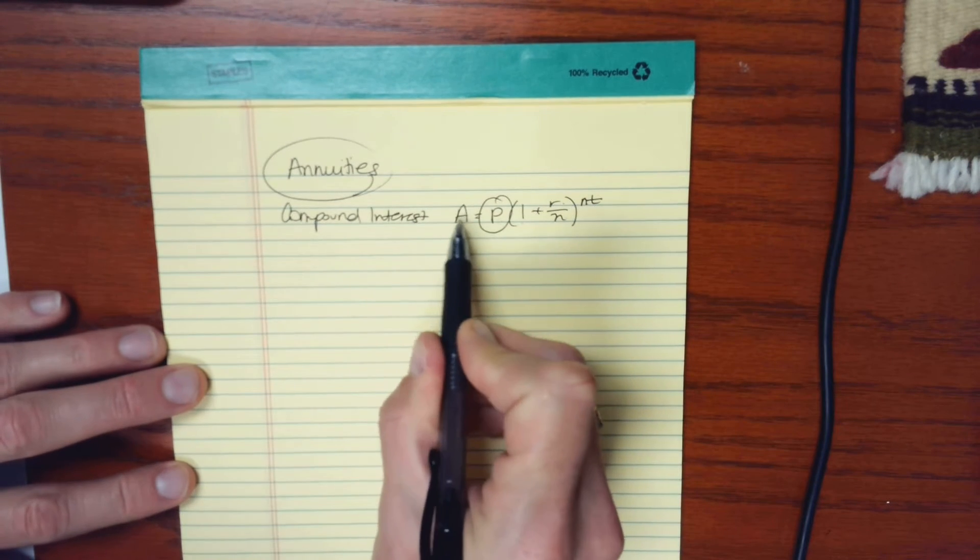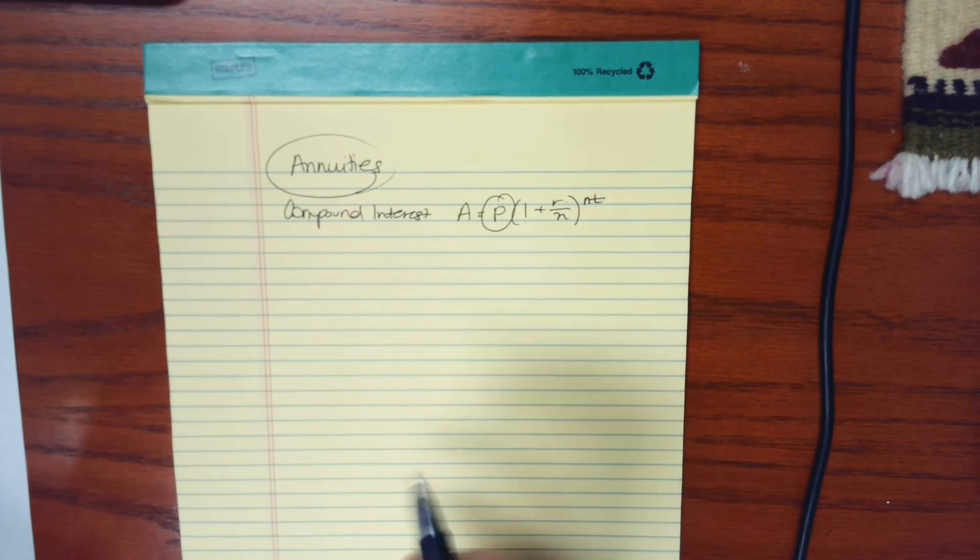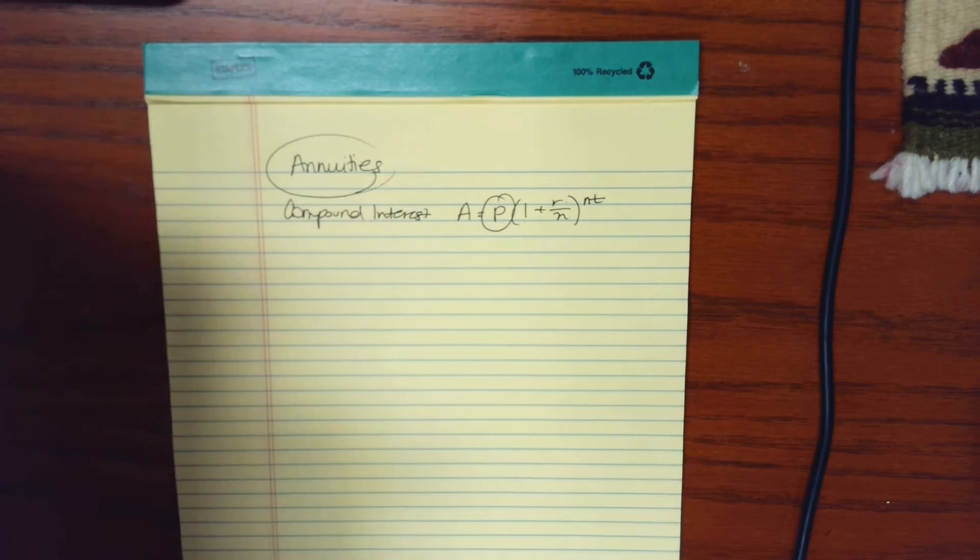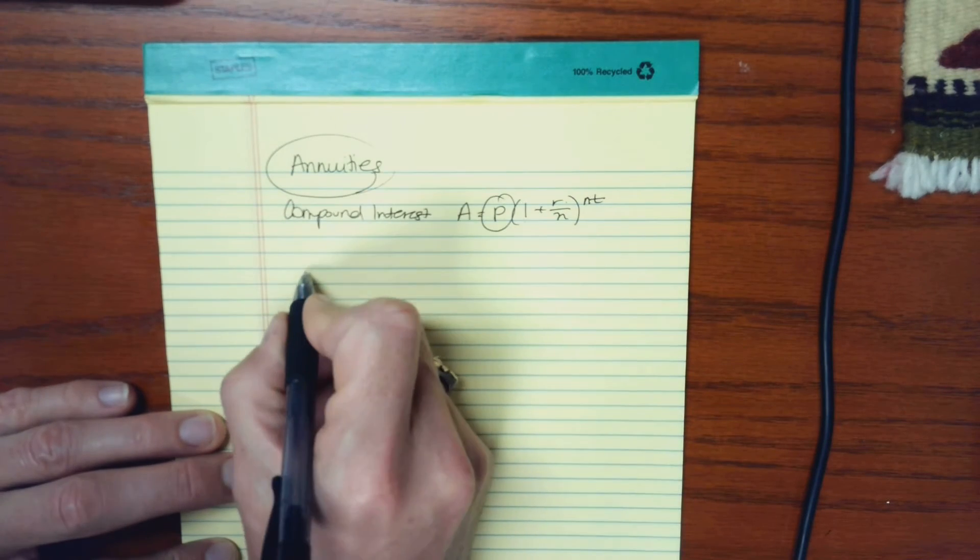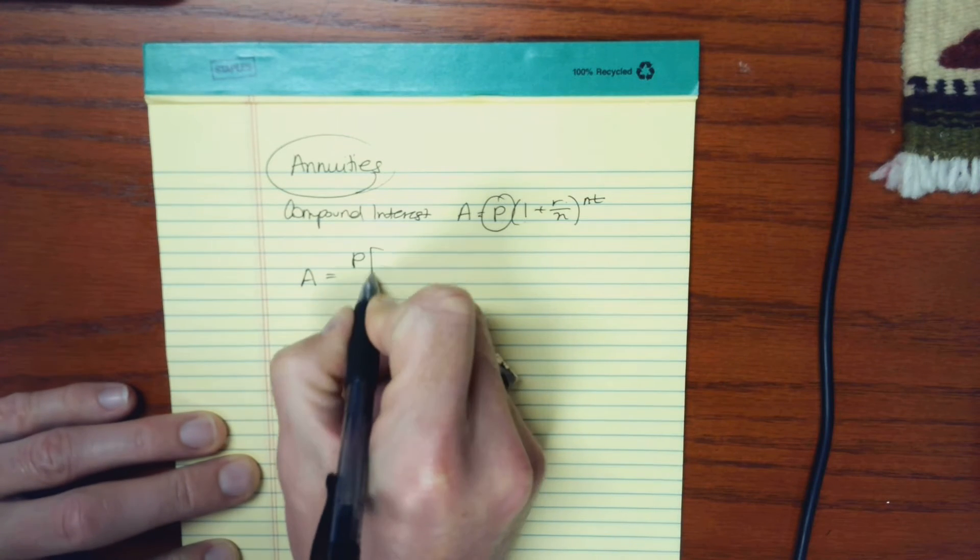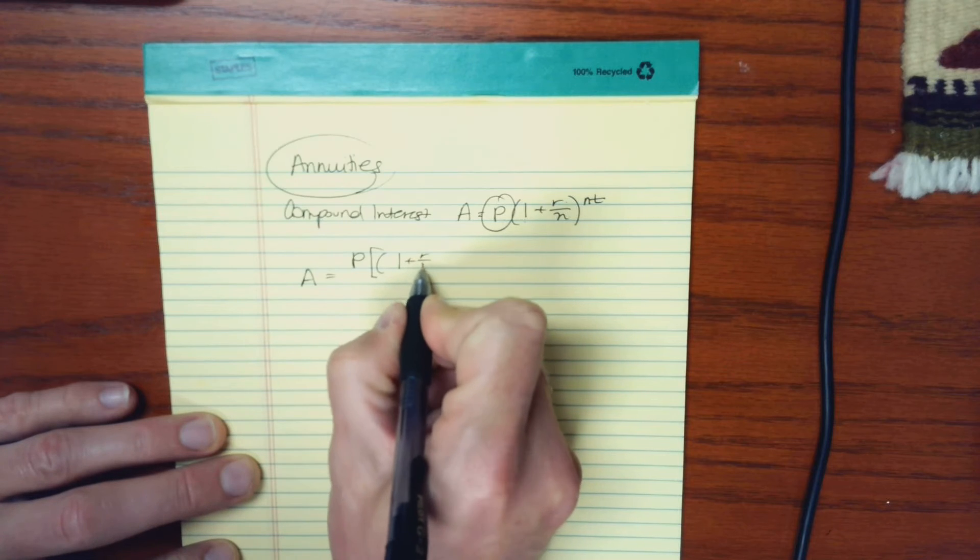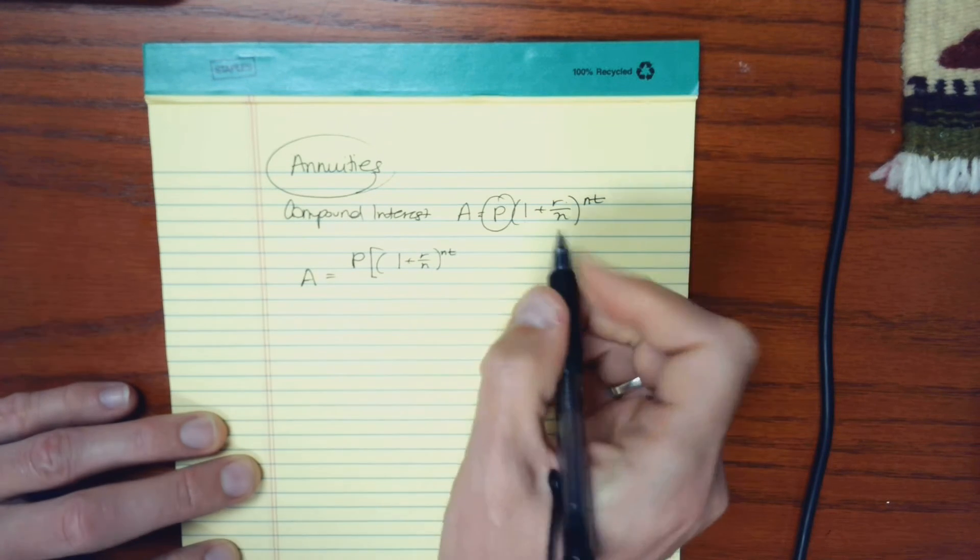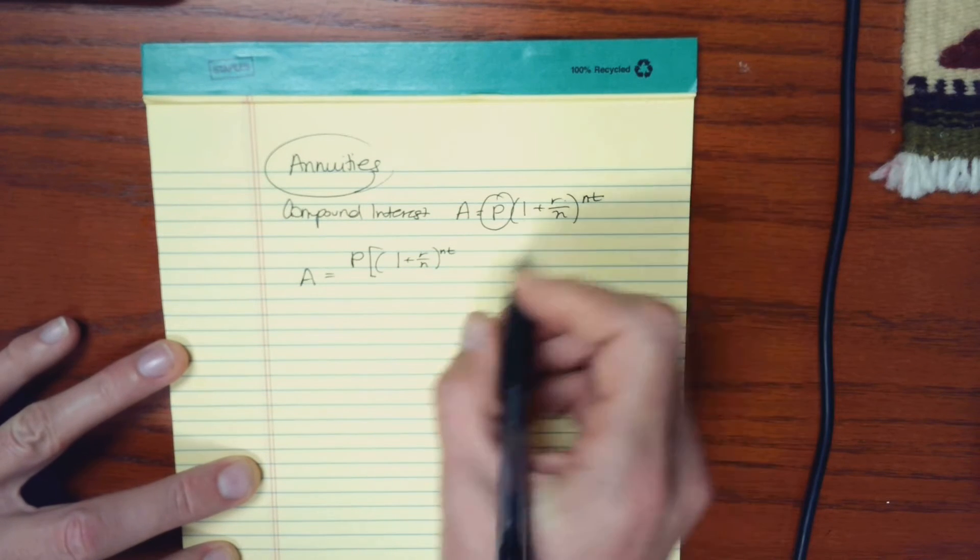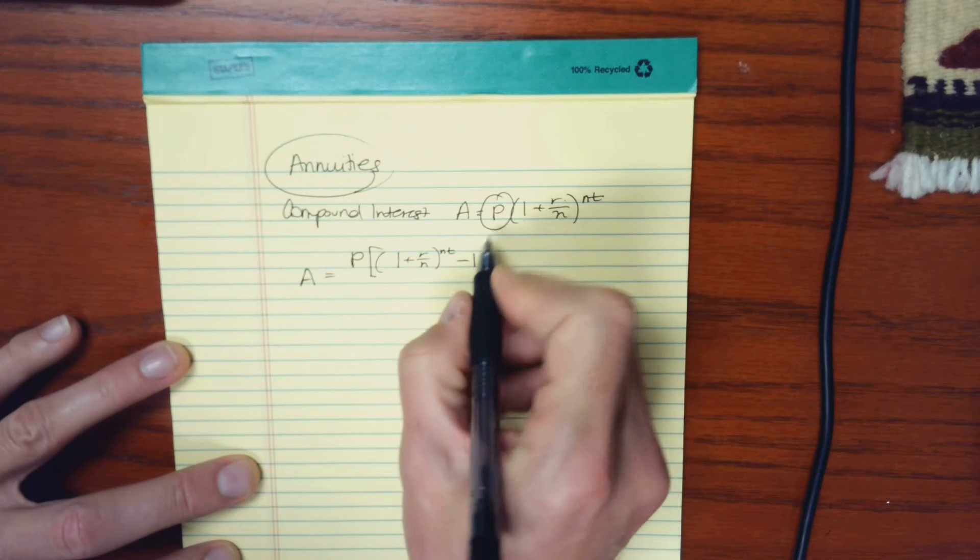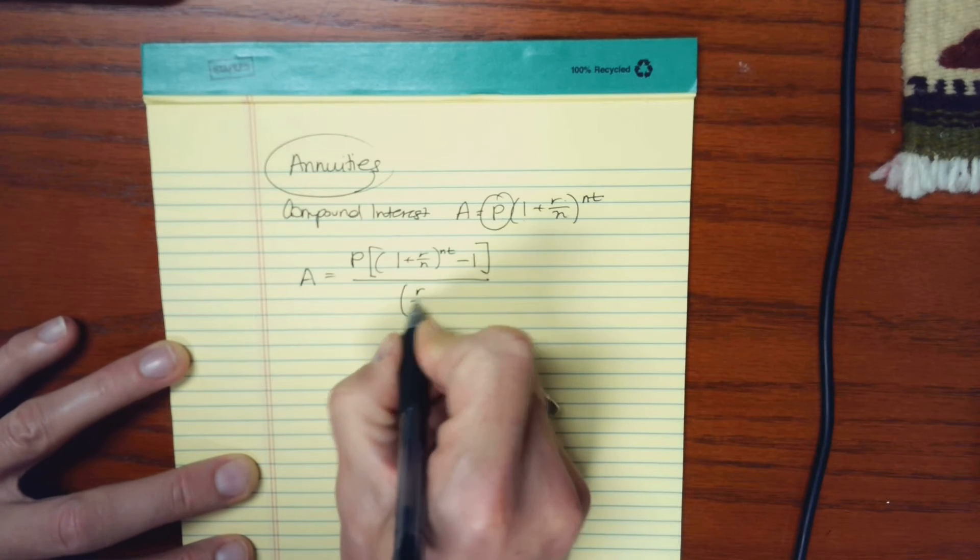A is still going to be the amount that you will have at the end of a certain amount of time. But the main formula that we're going to use here for an annuity is A equals P times one plus R over N to the NT. This looks familiar. That's the same factor that we saw in our compound interest formula. Minus one. So this is all over the fraction of R over N.